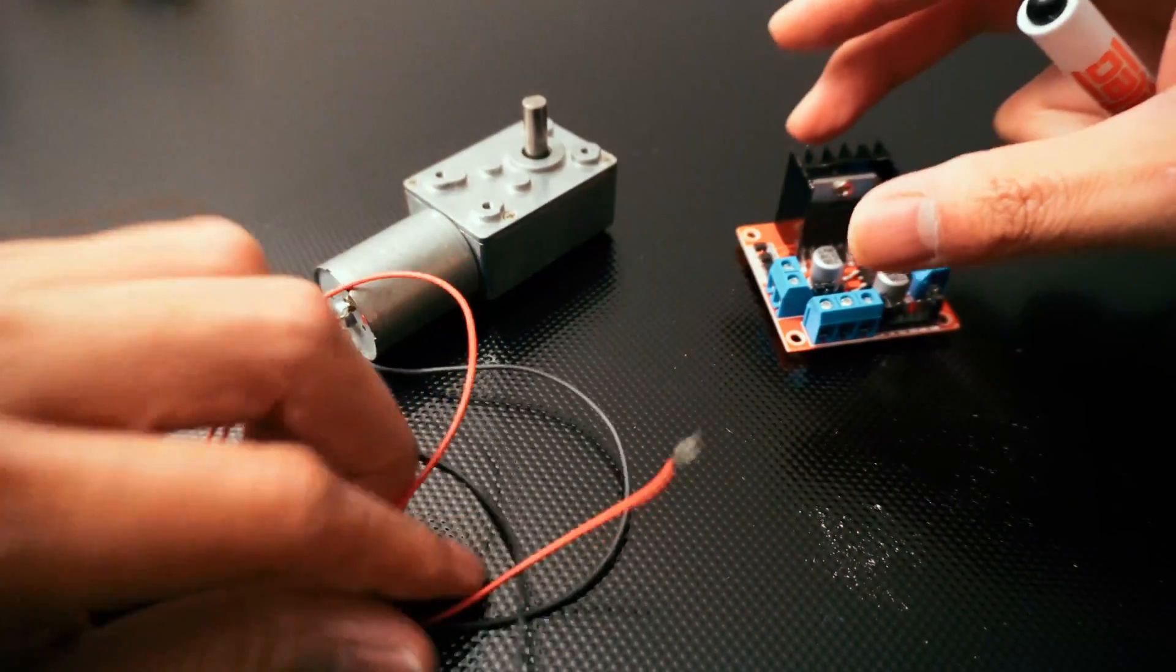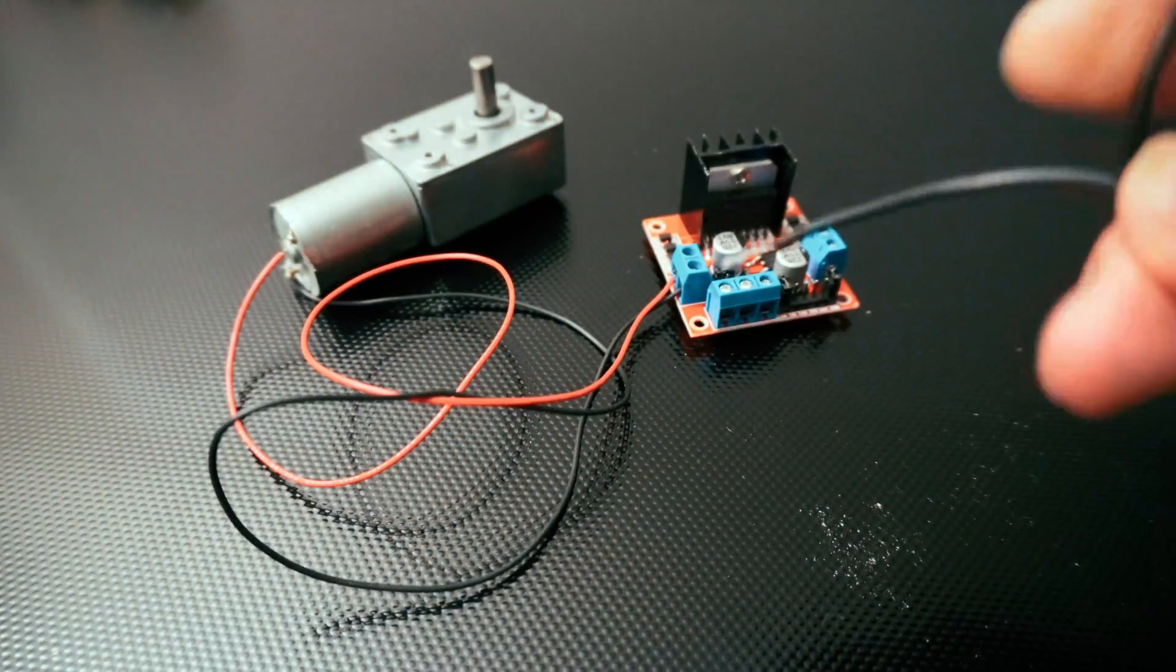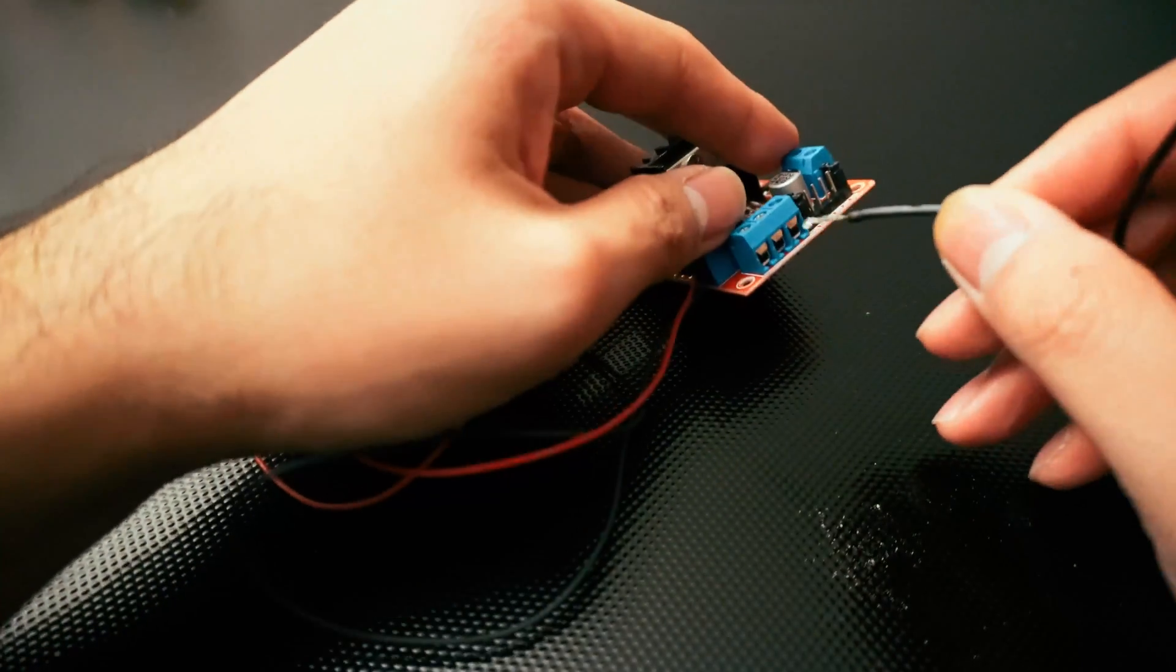If you're driving bigger 12V motors like this one, you can connect the motor the same way, with a simpler power connection. Just plug in your power source to the 12V and ground.